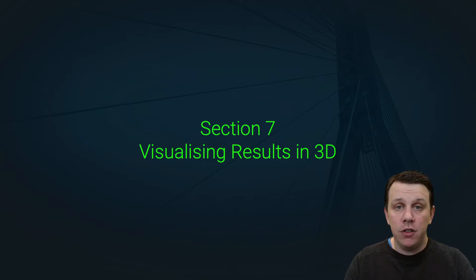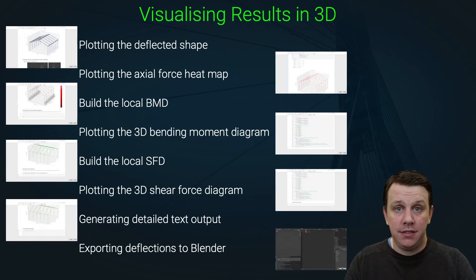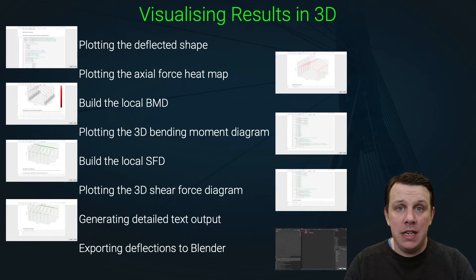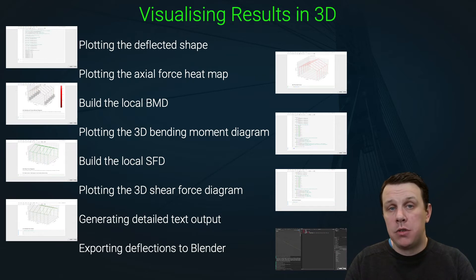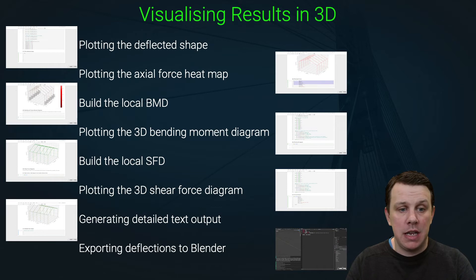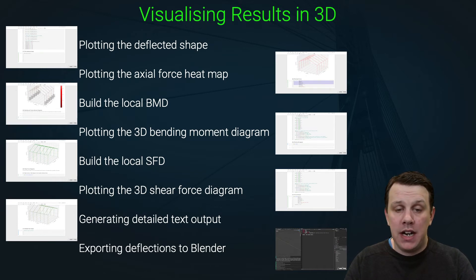The first visualization we're going to tackle is the deflected shape. We'll follow this up with an axial force heat map, which also has the option of printing the support reactions to screen on the same image. Next we'll tackle the big one: the 3D bending moment diagram.